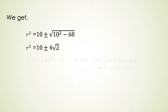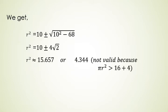Now we get R square is equal to 10 plus minus 4 under root 2. Here two values of R square are possible, 15.657 or 4.344. Here the second value 4.344 is not valid for R square because the area of the circle must be greater than the sum of the area of the squares and if this is the value, that is if 4.344 is the value of the radius square, then its area will be less than the sum of the areas of squares. Hence this is not valid.